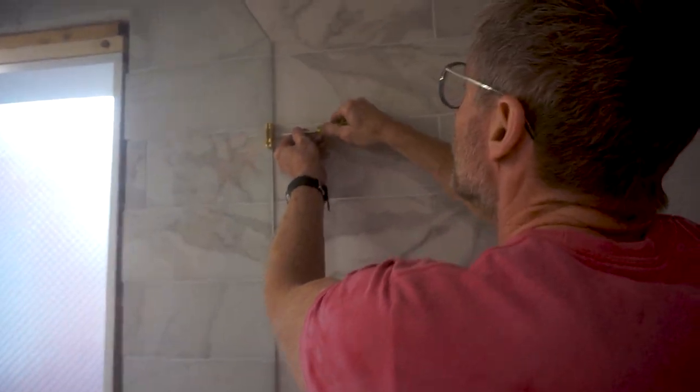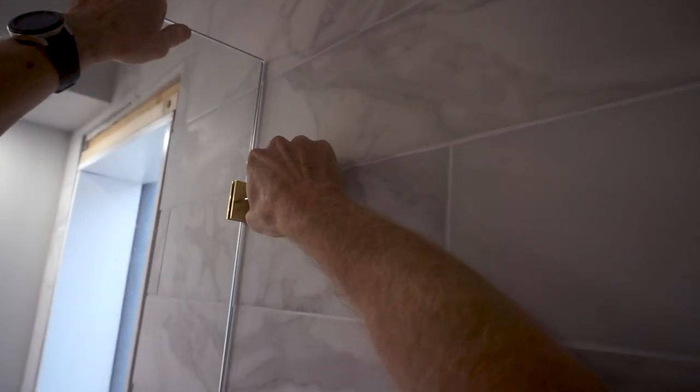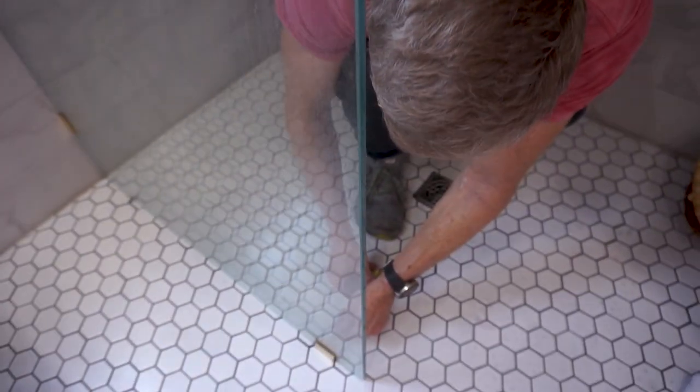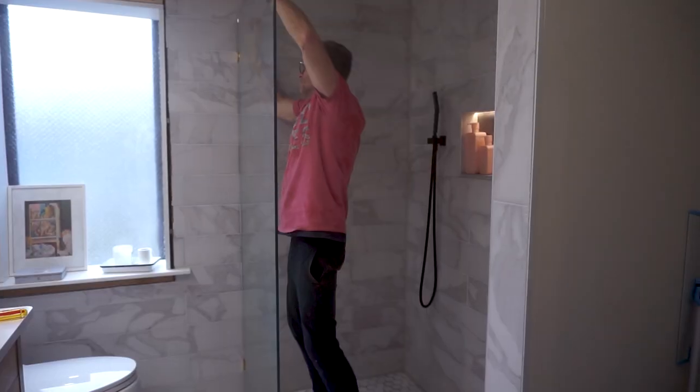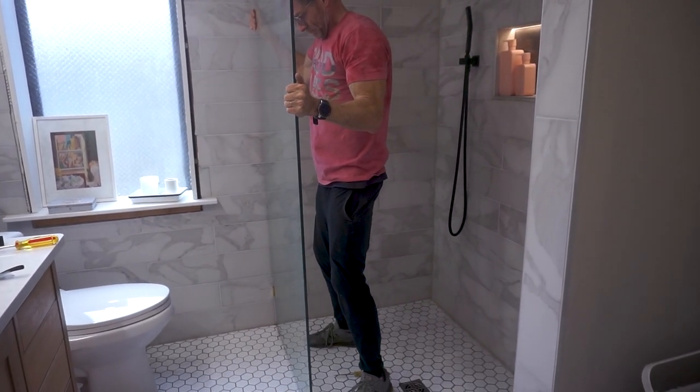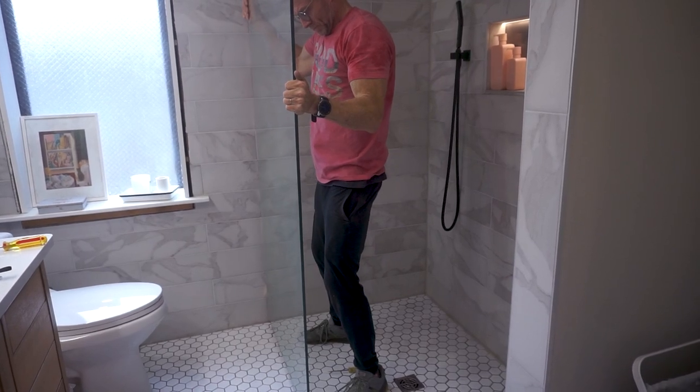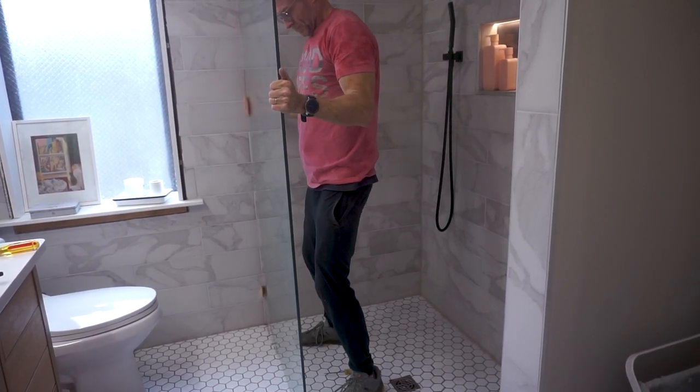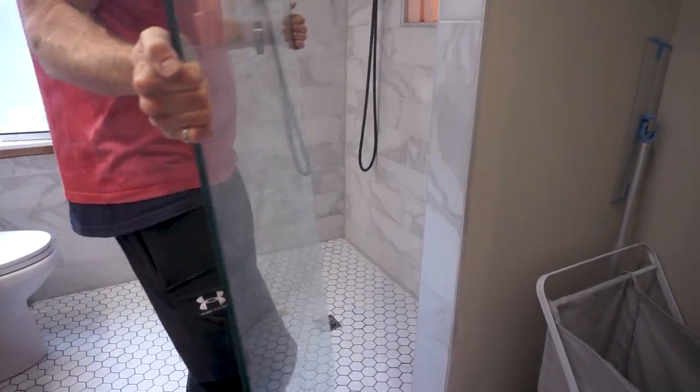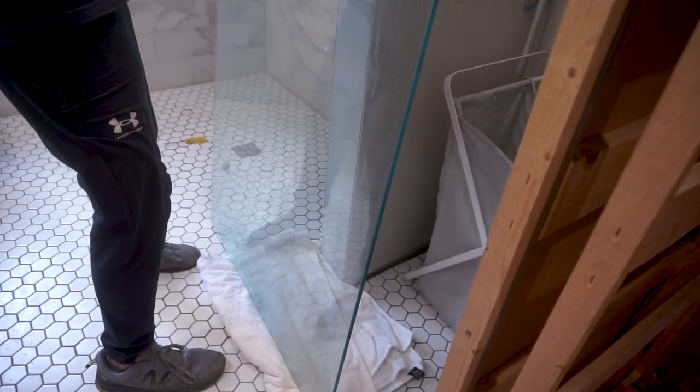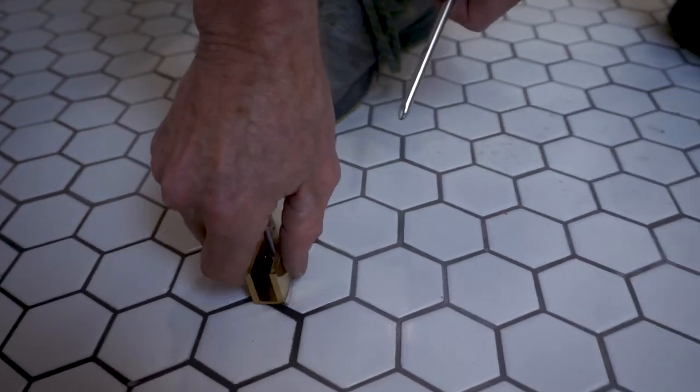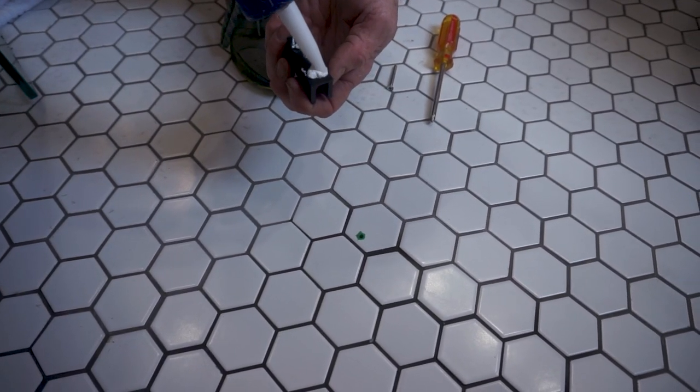The black hardware has arrived from Glass Warehouse so I'll remove the panel and swap out the hardware. This time I'll put some silicone under each piece of hardware. It looks white but it'll be clear when it has cured.